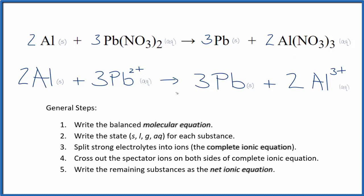So this is the balanced net ionic equation for Al plus lead two nitrate. This is Dr. B and thanks for watching.